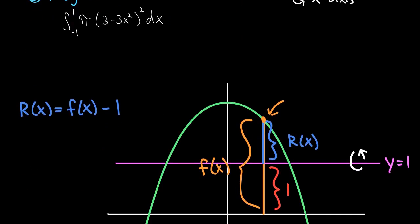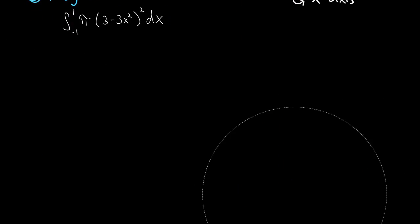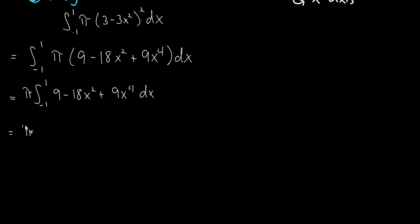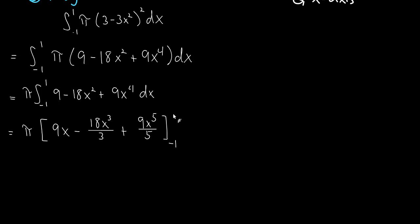Now we just do the busy work of solving the integral. First, we square out the term by FOILing, which gives us 9 minus 18x squared plus 9x to the fourth dx. Pi is just a constant, so we factor it out. Then we apply the antiderivative power rule: this becomes pi times the quantity 9x minus 18x cubed over 3 plus 9x to the fifth over 5, evaluated between minus 1 and 1.